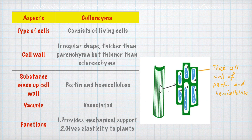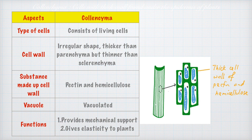The next ground tissue type is colenchyma tissue. Colenchyma tissue also consists of living cells. The cell wall is irregular in shape — it is thicker than parenchyma but thinner than sclerenchyma. The substances that make up the cell wall are pectin and hemicellulose, and it also has a vacuole. The function of colenchyma tissue is to provide mechanical support and to give elasticity to plants.